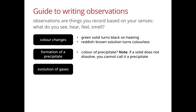The third point is on whether gases are being released. When gases are released, is there effervescence? Do you see bubbling? Is there a smell of the gas, and also describe what colour the gas is. For example, chlorine gas is greenish yellow and nitrogen dioxide gas is reddish brown in colour. Also, when gases are released in an experiment, we would usually do an additional step to test the identity of the gases, so we may want to include the results for the test for different gases.